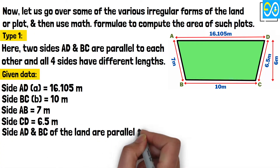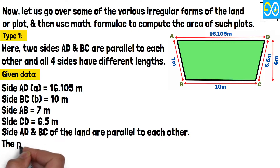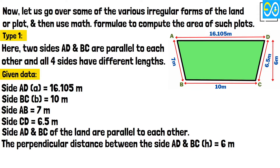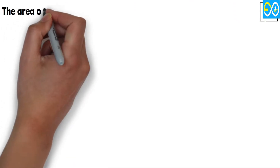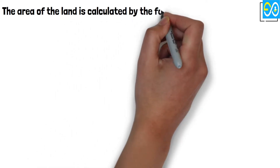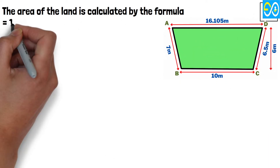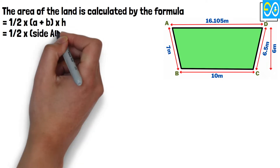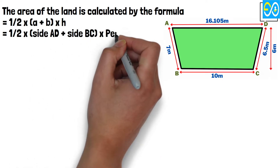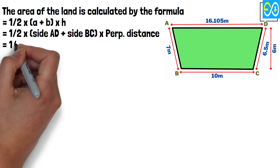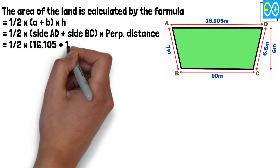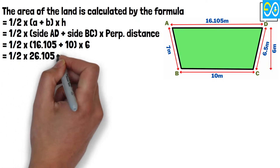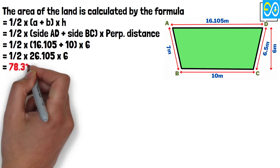Side A, D and B, C of the land are parallel to each other. The perpendicular distance between side A, D and B, C equals 6 meters. The area of the land is calculated by the formula: equals half times A plus B times H. Equals half times side A, D plus side B, C times perpendicular distance. Equals half times 16.105 plus 10 times 6. Equals half times 26.105 times 6. Equals 78.315 square meters.